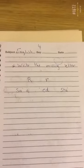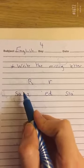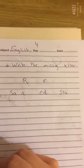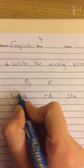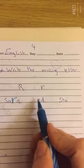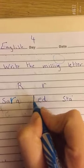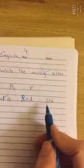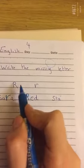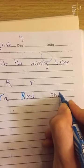Write the missing letter — we will write our capital letter R or our small letter r. Look at this word: the missing letter is in the middle, so we write our small letter r. The next one: the missing letter is at the beginning, so we write our capital letter R. The last one: the missing letter is at the end, so we write our small letter r. Excellent!